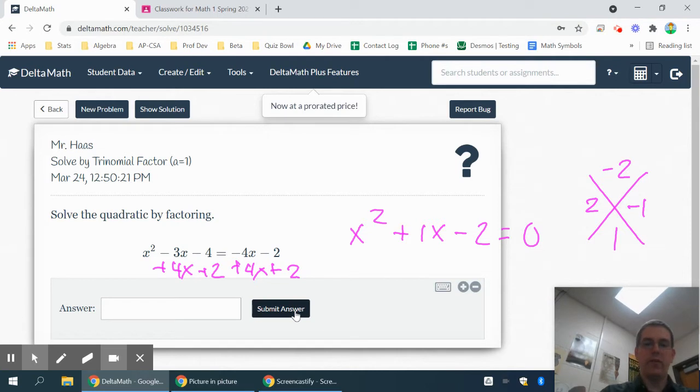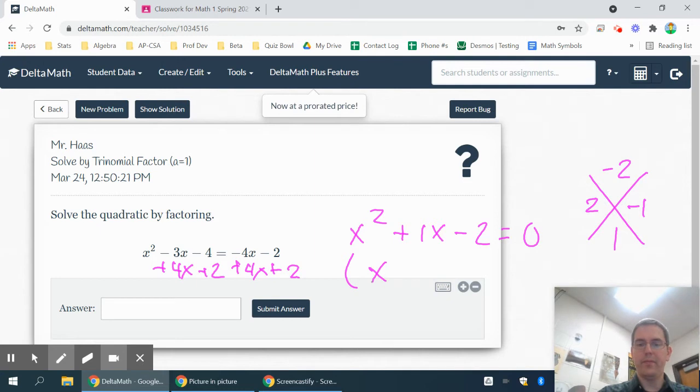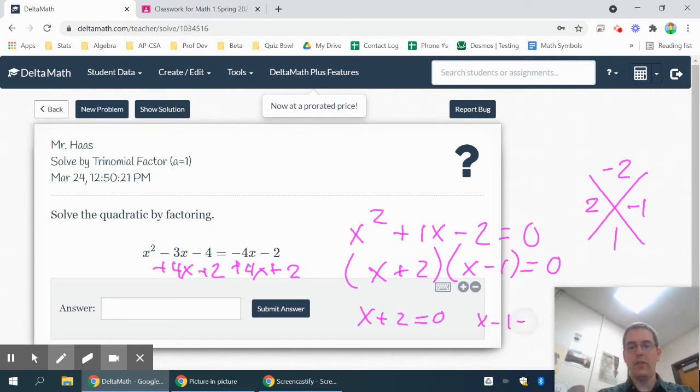So that means when I go to factor this, not quite ready for my answer yet, I have an x plus 2 and an x minus 1. Now since both of these could be equal to zero, it's true that if the first one equals zero, my answer would be zero. If the second one is zero, my answer is zero because if I multiply a number that is zero times any number, the answer will be zero.